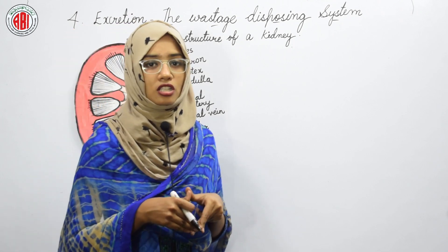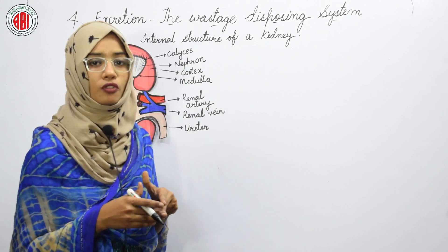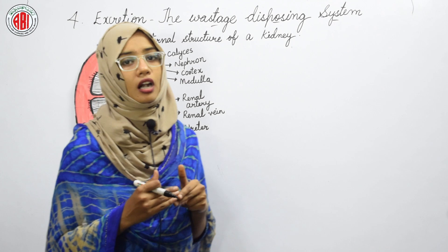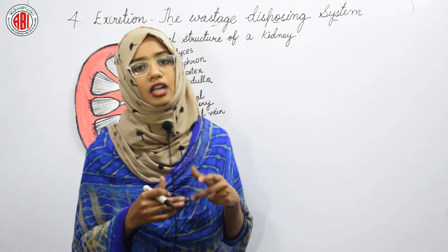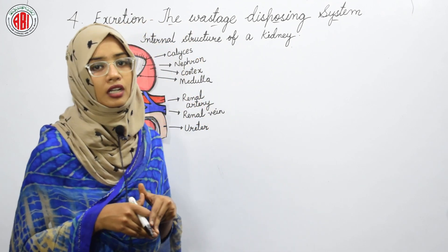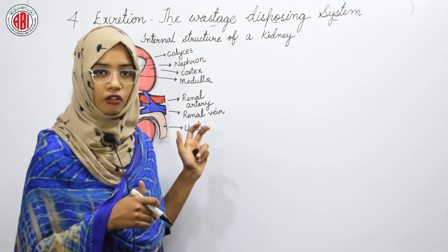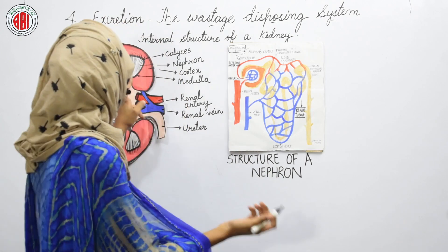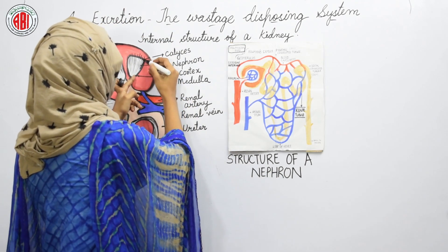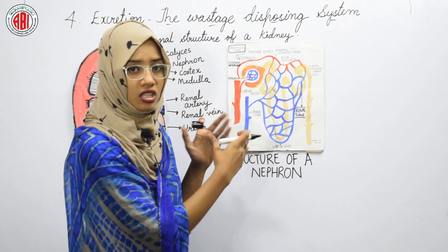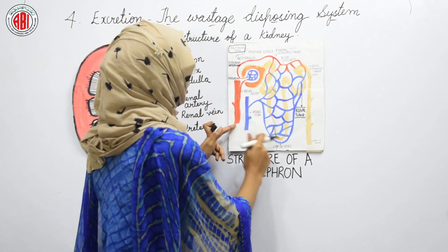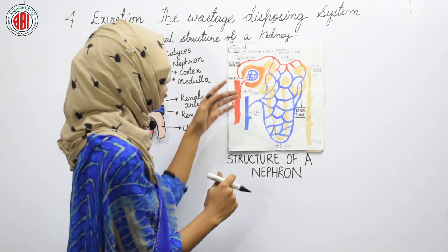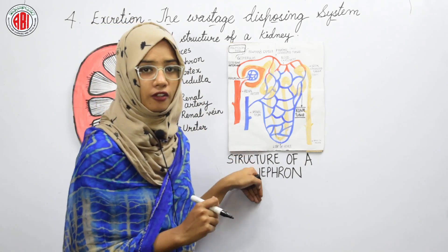To understand the mechanism of formation of urine, we need to first study the structure of the nephron in detail. Only then can we understand the mechanism of purification of blood and how urine is going to be formed. When we see this thread-like structure under the microscope or if we want to see it clearly, we can observe this type of structure — this is the structure of a nephron.